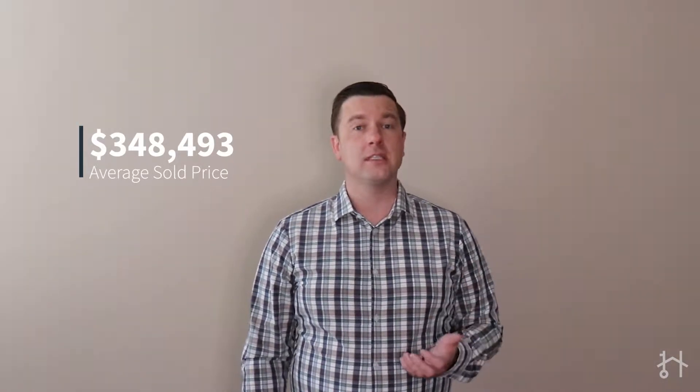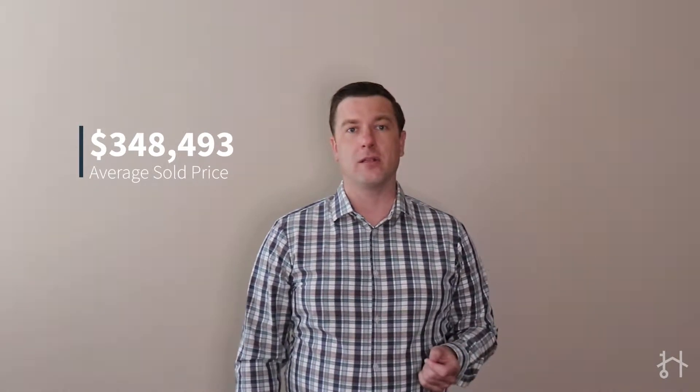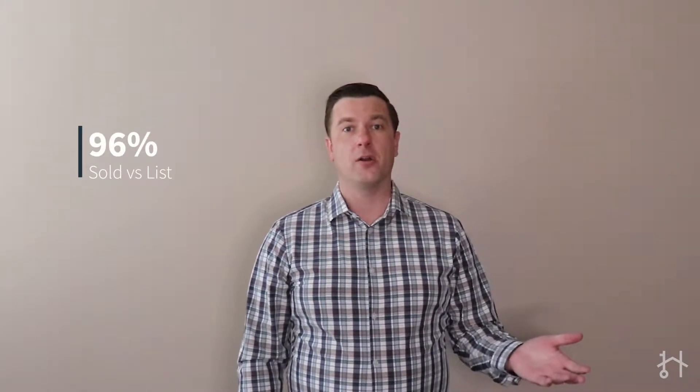Now homes are still selling very close to their list price. Almost every month it seems like the number is the same: 96%. Put simply, if you were selling a $100,000 home, it would likely sell for $96,000. Of course, a $100,000 home will probably sell over the list price, but in general that's how that ratio works.